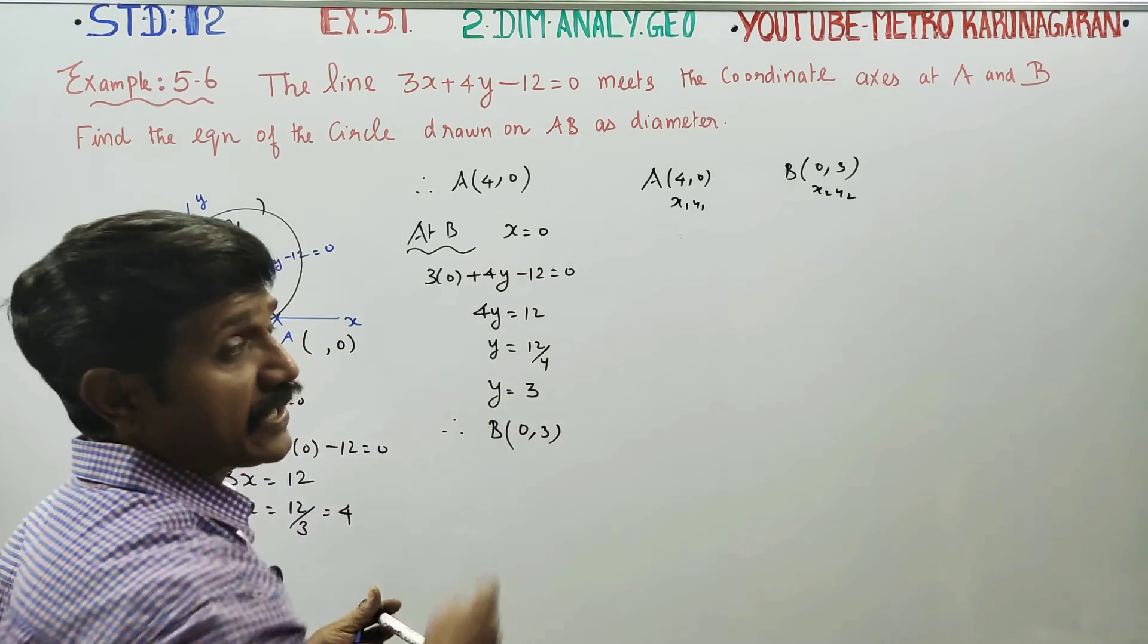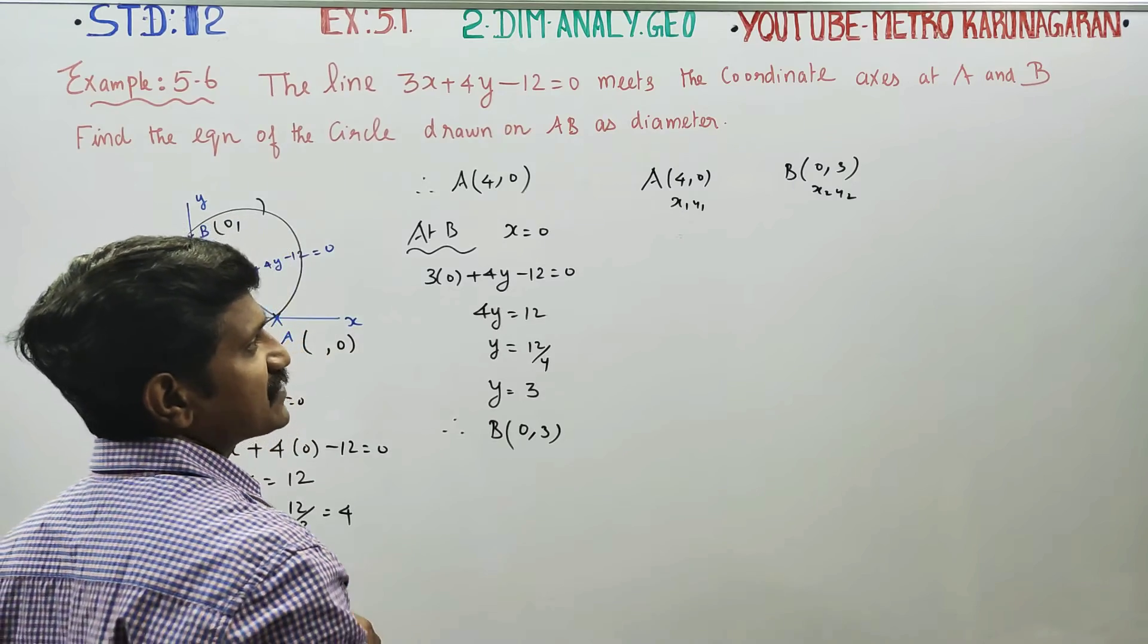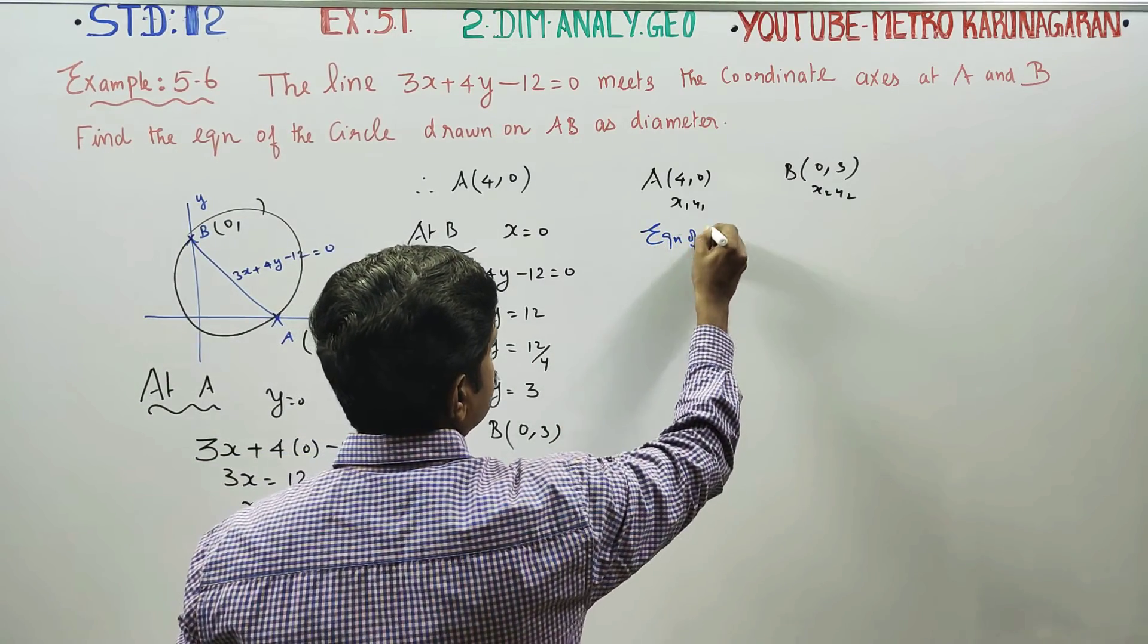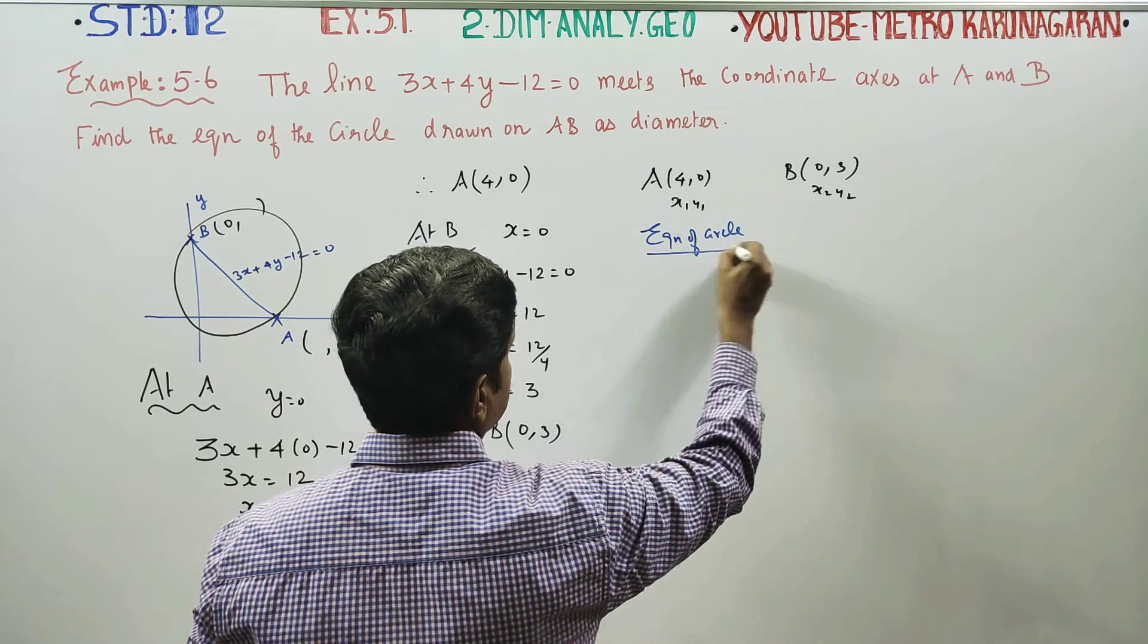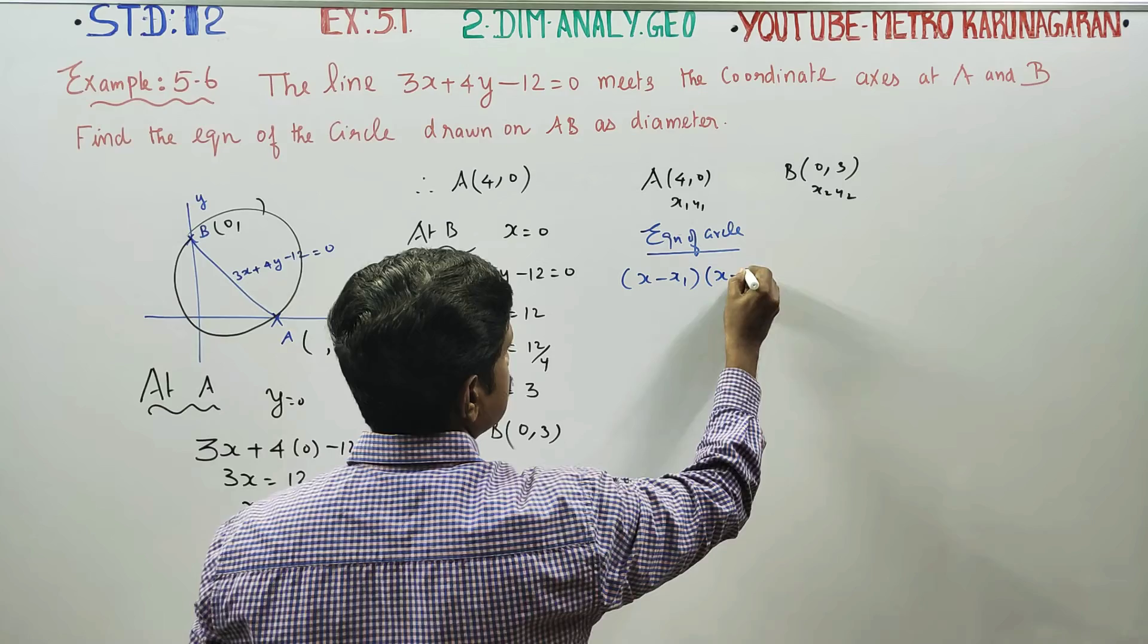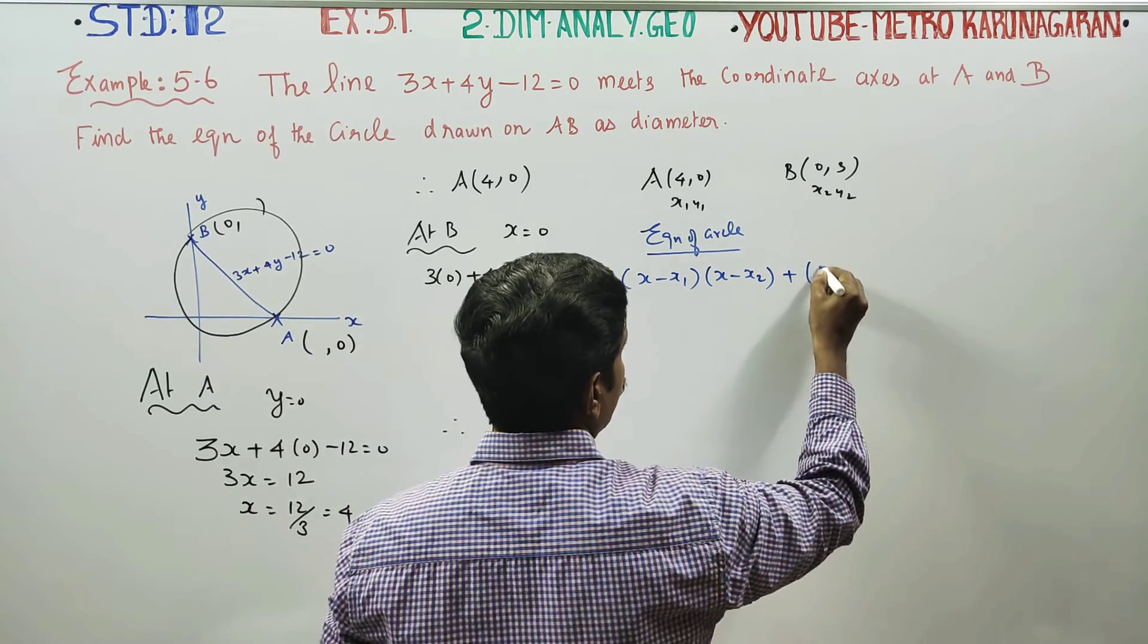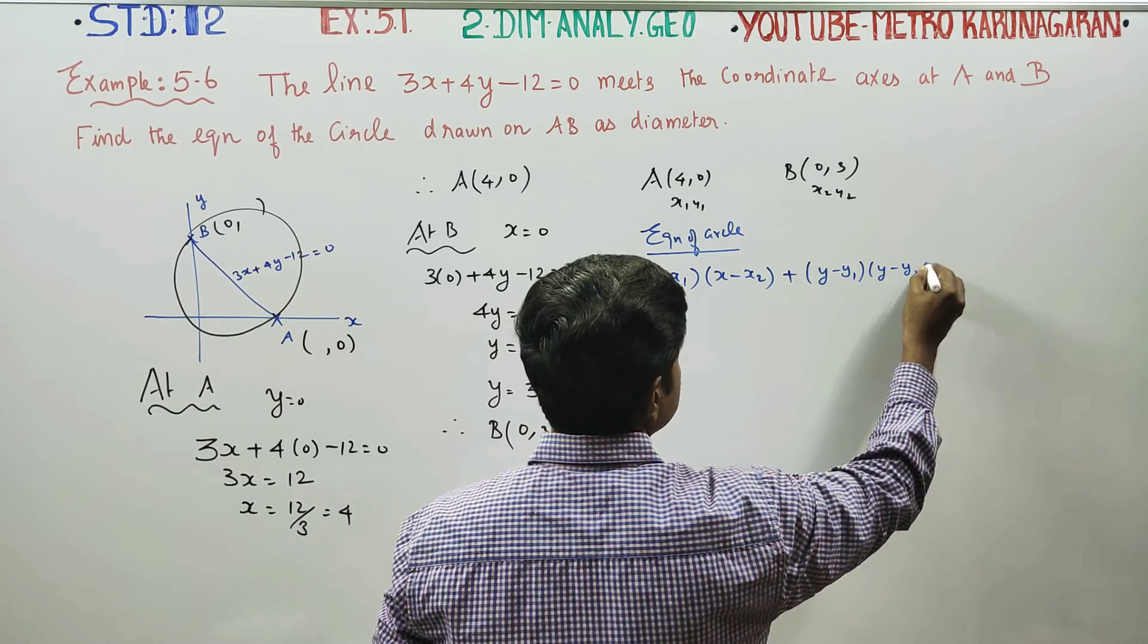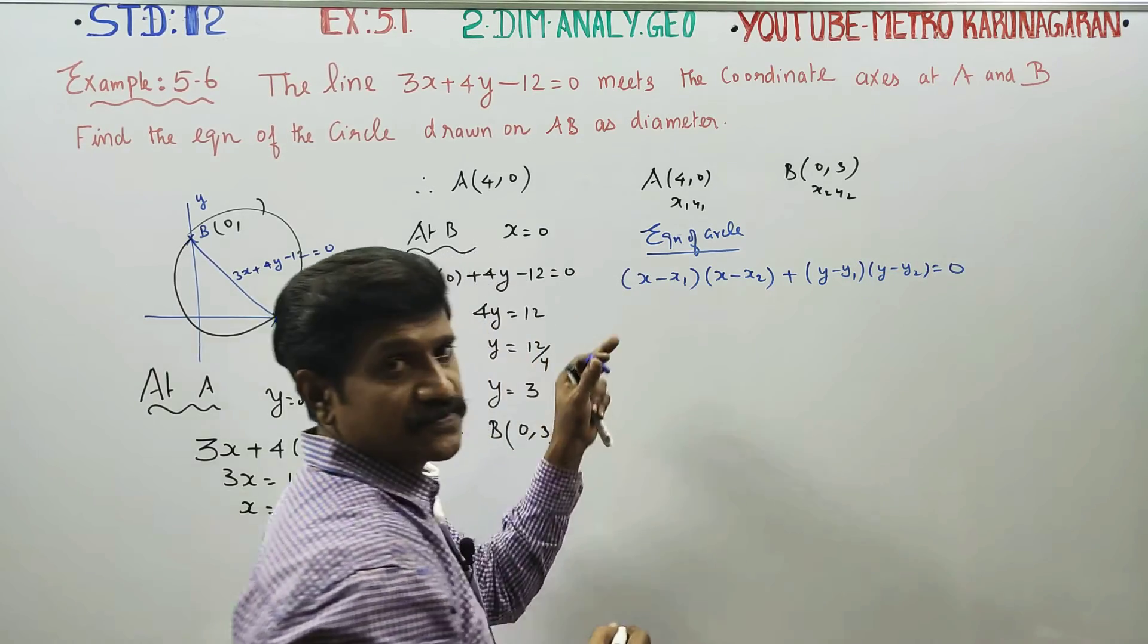The equation of the circle with A and B as extremities of the diameter is: (x - x₁)(x - x₂) + (y - y₁)(y - y₂) = 0.